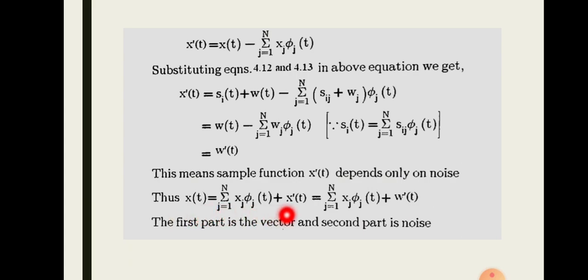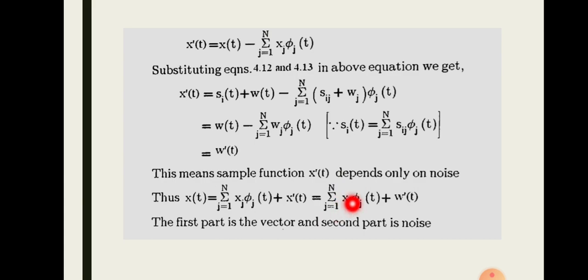If we have a vector channel, we can represent x(t) as a vector channel. The continuous AWGN channel has thus been converted into a vector channel representation, where the noise component is also represented as a vector.